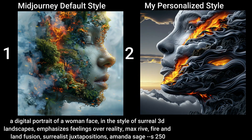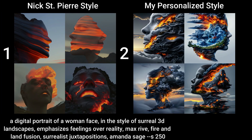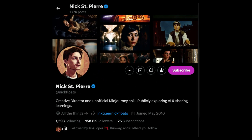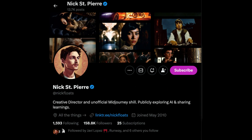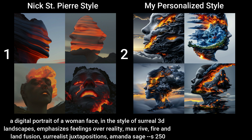If you want to generate images using my personal style, the code will be in the description below. To show how personal everyone's style is, these image sets were also generated using the same prompt, but each was generated using a separate personal style code. The first set used a code from a creator called Nick, shared on his X account — I'll leave a link. Looking at the two sets, it's amazing how different they are despite using the same prompt.